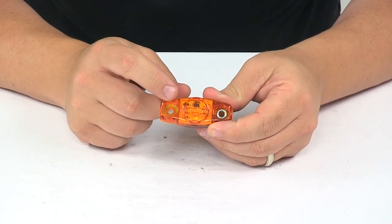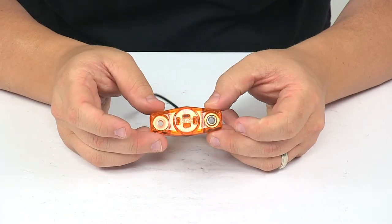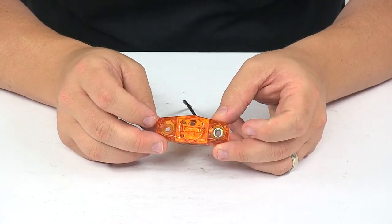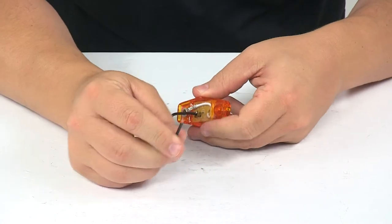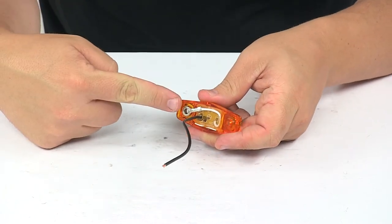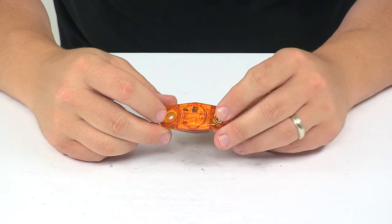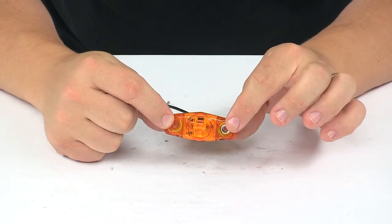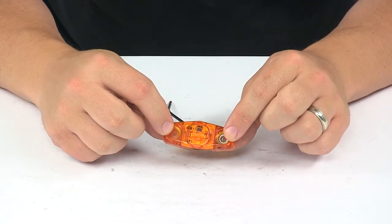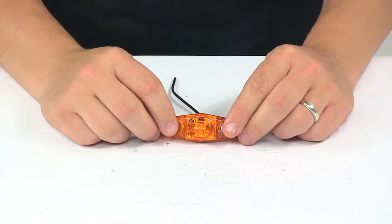This is an amber light with a durable amber polycarbonate lens. It's a single wire design for power and the unit grounds through the mounting hardware. Again, mounting hardware not included. It is PC and P2 rated and SAE and Department of Transportation compliant.